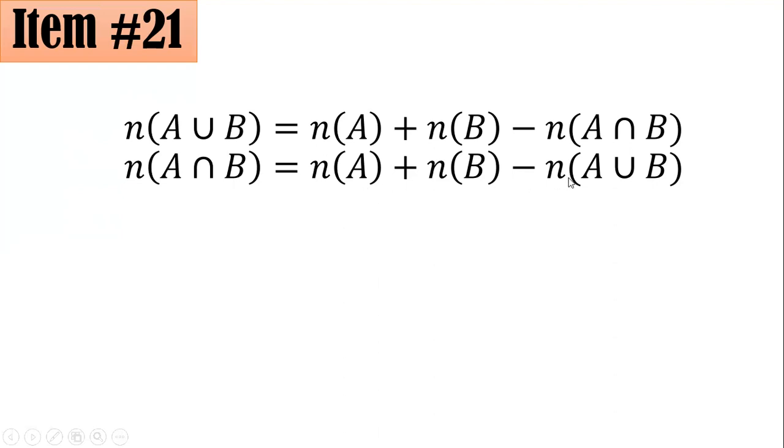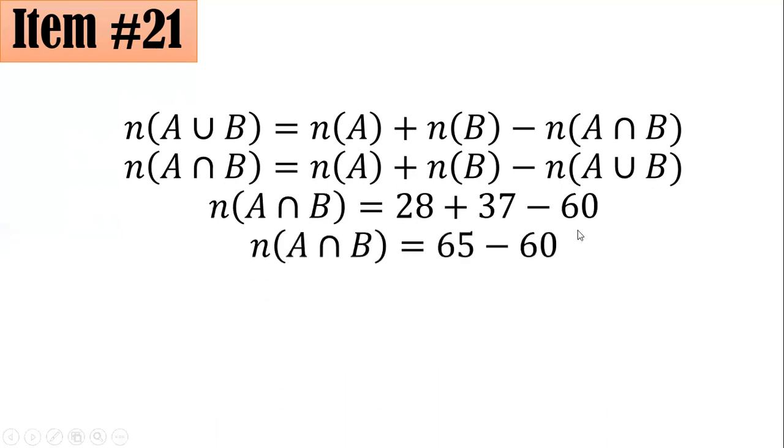Take note, A here stands for the cardinality of those who like Coke and B is for those who like Sprite. So by substitution we have now 28 plus 37 minus 60 and that is five. So if you answered B, great job. There are five people who like Coke and Sprite.